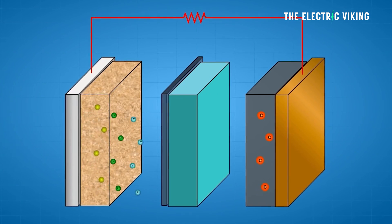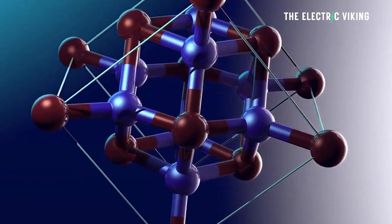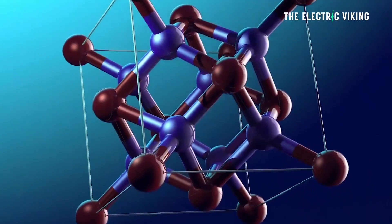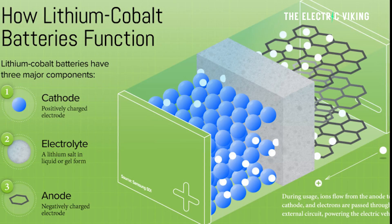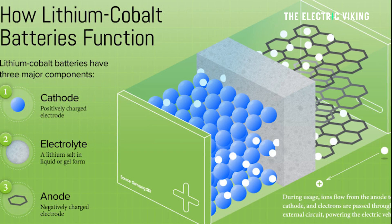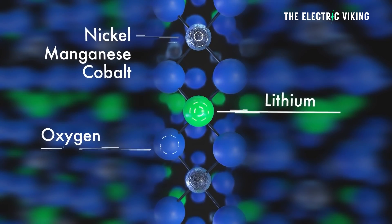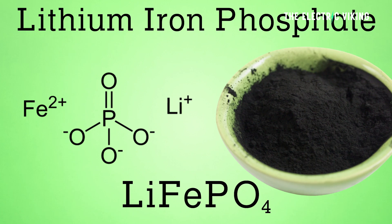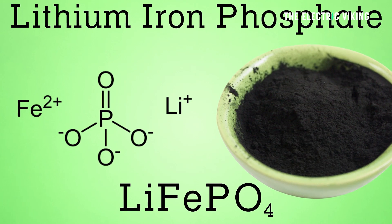What about the cathode? Well, the cathode of a lithium-ion battery is usually composed of a lithium transition metal oxide, such as lithium cobalt oxide, lithium manganese oxide, lithium nickel manganese cobalt oxide, or lithium iron phosphate.